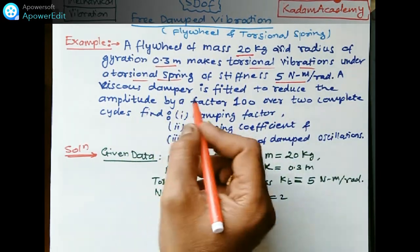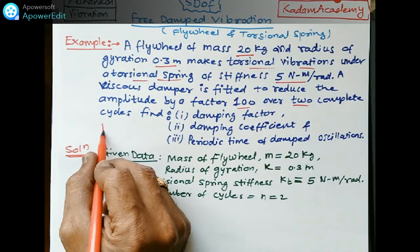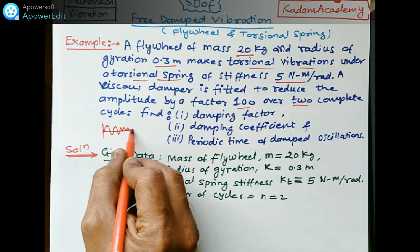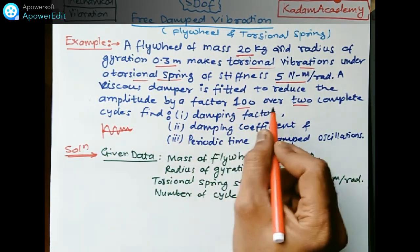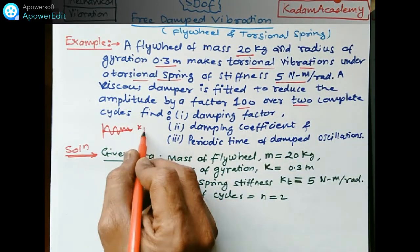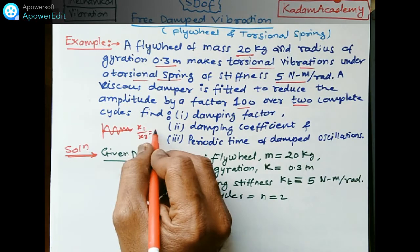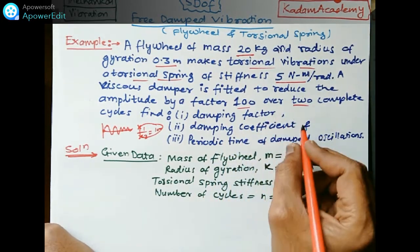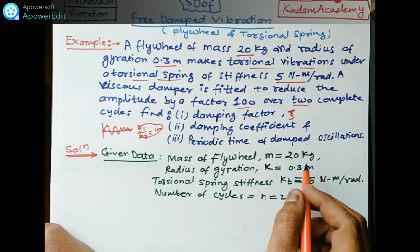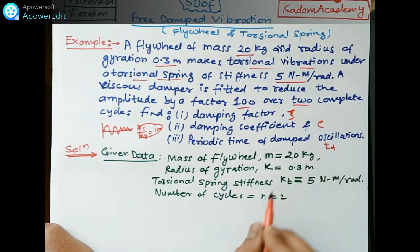A viscous damper is fitted to reduce the amplitude by a factor of 100 over two complete cycles. That means between the first cycle x₁ and after two cycles x₃, the ratio x₁/x₃ equals 100. We have to find the damping factor zeta, the damping coefficient, and the damped periodic time T_d.